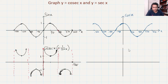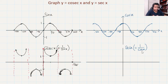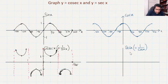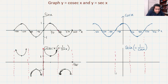Now for the sec X graph. Sec X equals 1 over cos X, so it is the reciprocal of cosine. Where cos X equals 0 the graph is undefined, giving vertical asymptotes. Cos X equals 0 at 90 degrees and at 270 degrees, so we place asymptotes there. Also at negative 90 degrees and negative 270 degrees there are asymptotes.